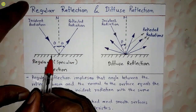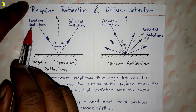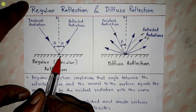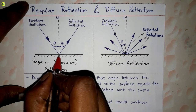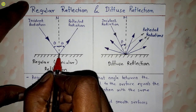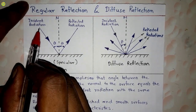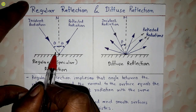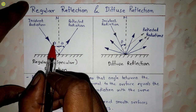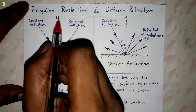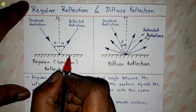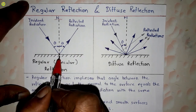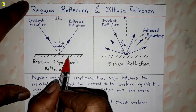On this smooth surface we apply incident radiation. This incident radiation will strike the smooth surface at a point, making an angle theta with the normal to this smooth surface.